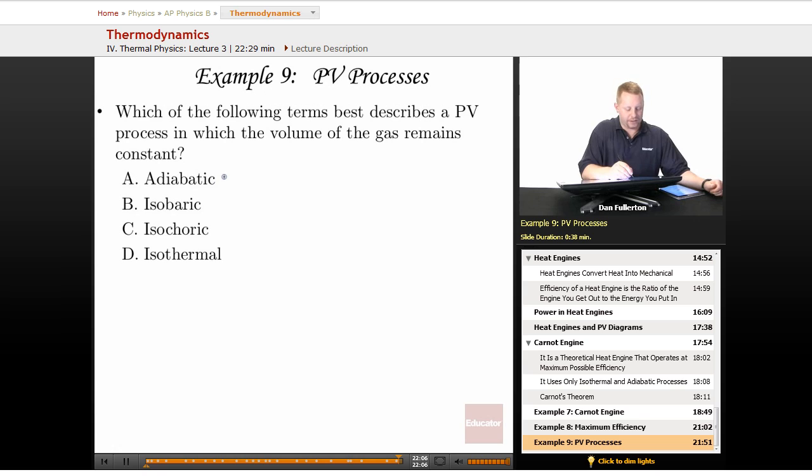Adiabatic, no, that's constant Q. Isobaric, that's constant pressure. Isochoric, that's constant volume. Constant V. And isothermal, of course, constant temperature. So our correct answer there must be C.